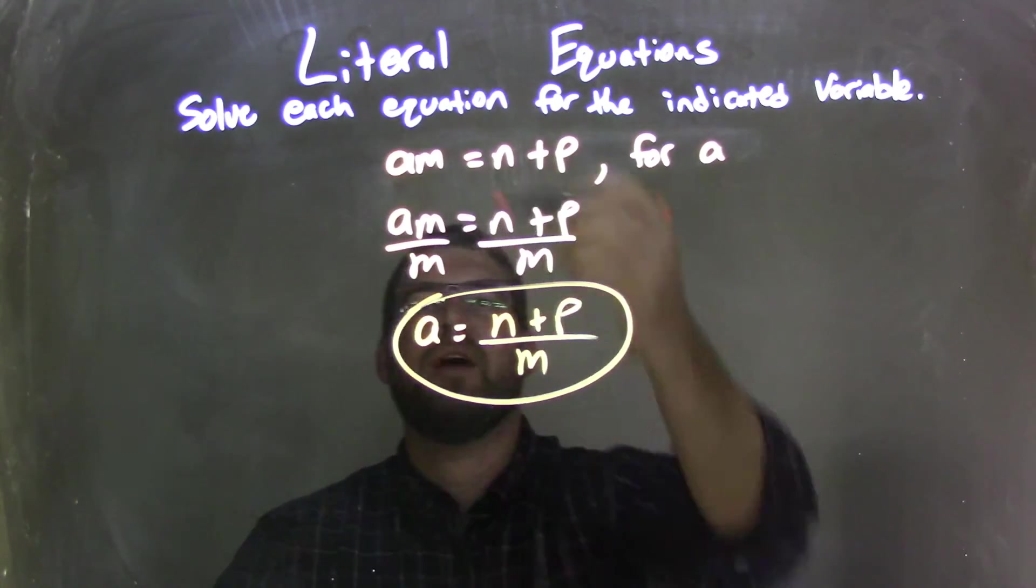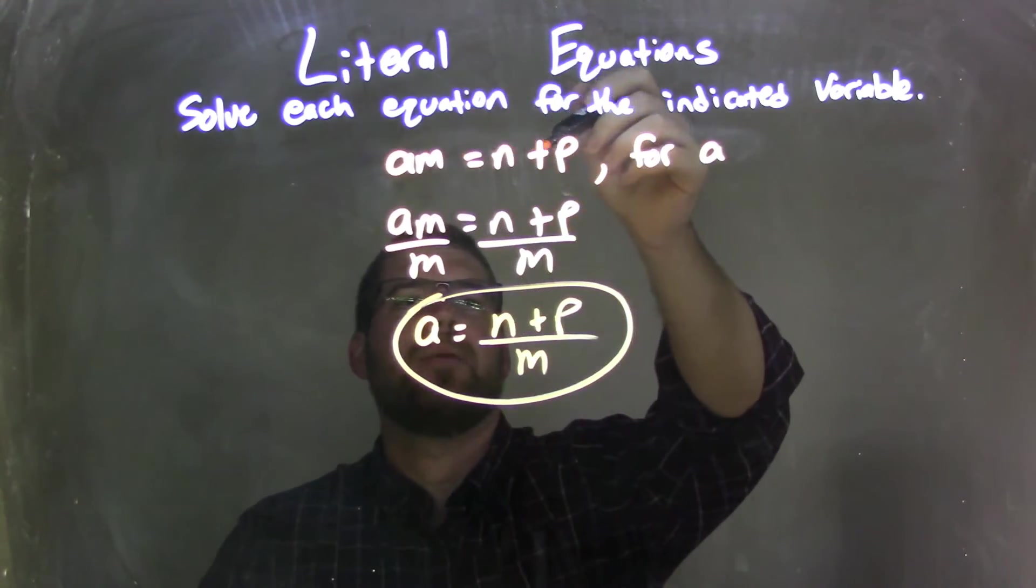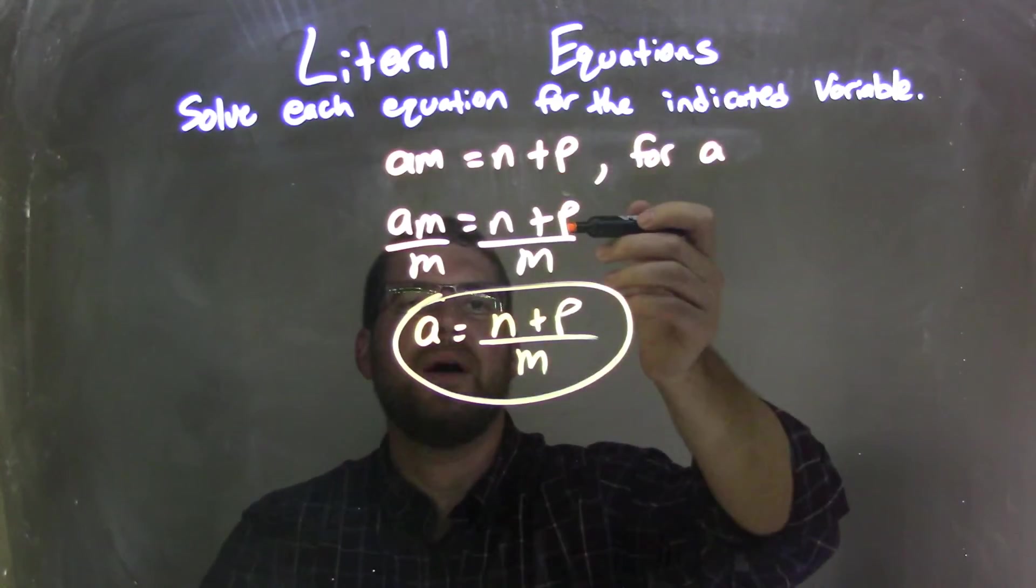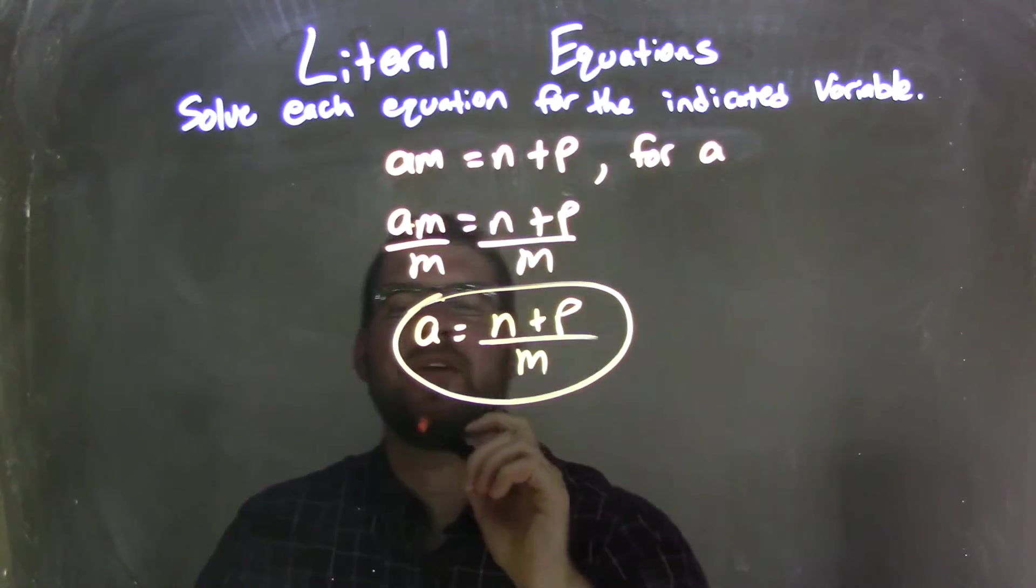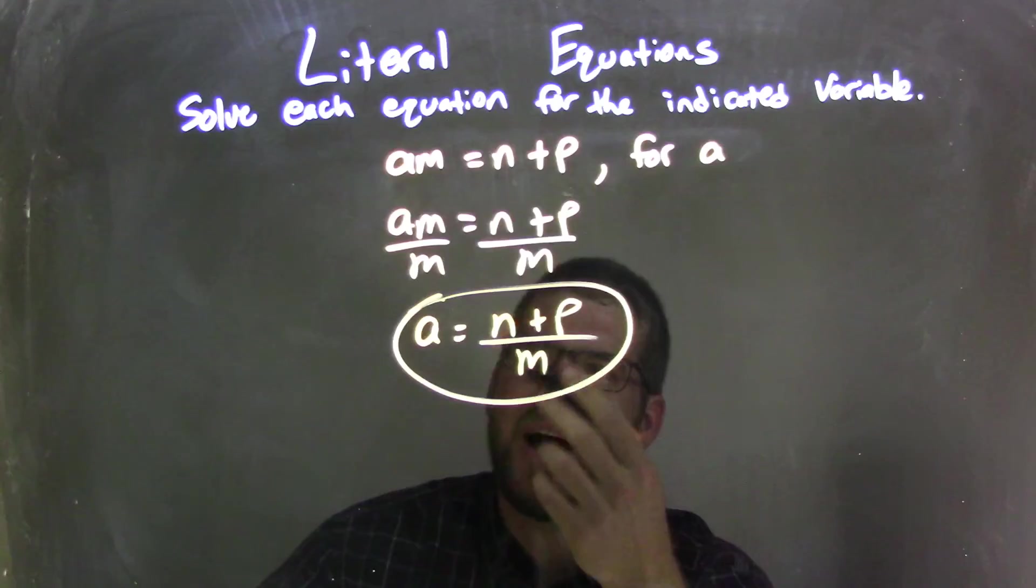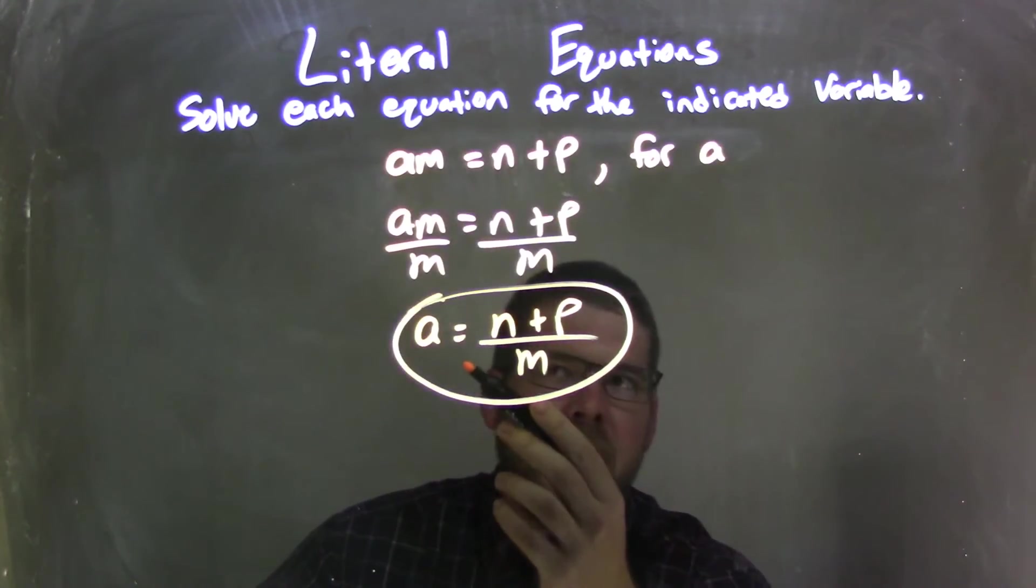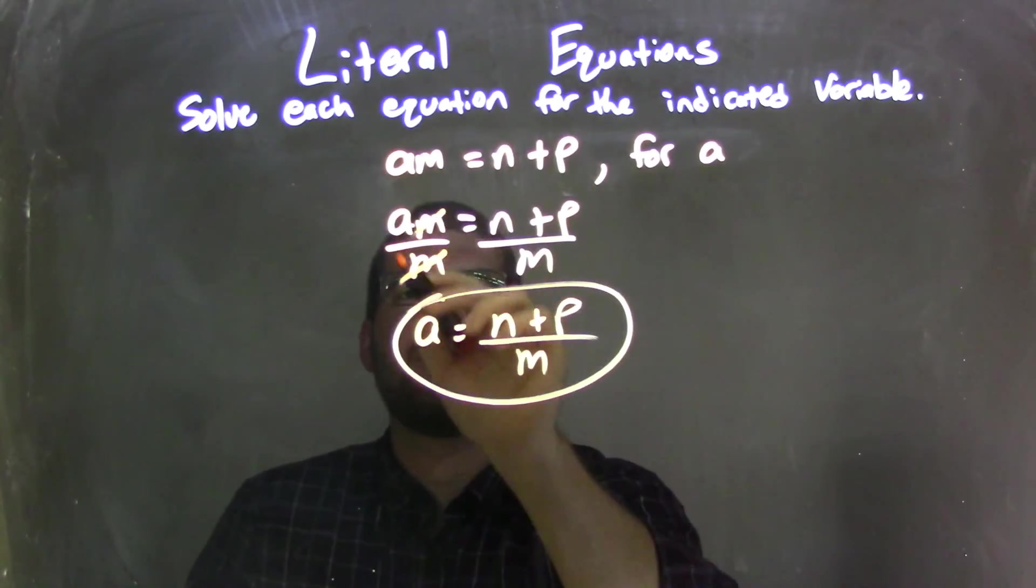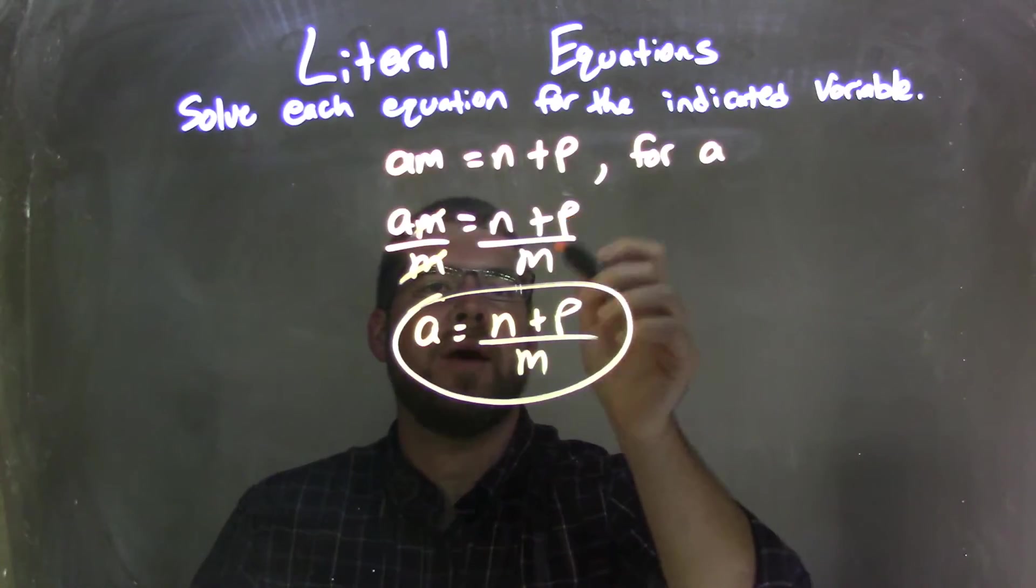So let's recap. We have a times m equals n plus p, and we're solving that for a. So I rewrote my equation, and then I notice there's multiplication between the a and the m. So I divided m to both sides so I can isolate my a. By doing so, the m's canceled on the left, leaving me with an n plus p on the right all over m.